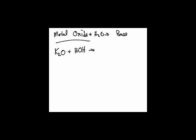So to summarize: non-metal oxides with water make acids, metal oxides with water make bases. The base of potassium would be potassium hydroxide — KOH. But that's not correct written that way, because KOH is a strong electrolyte.